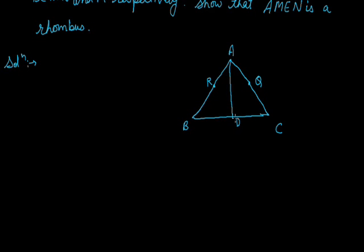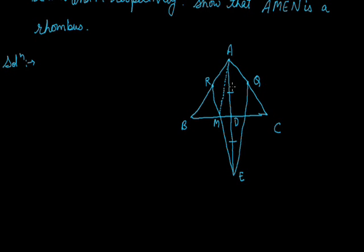Next we have to produce AD to E such that AD equals AE. This point is E where AD is equal to AE. Now we will mark point R by E and also point M.